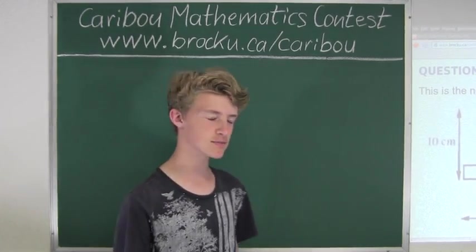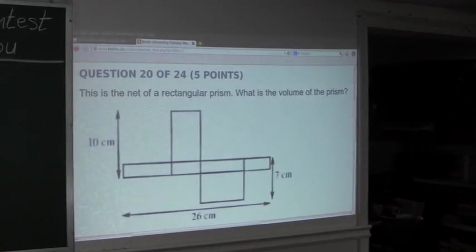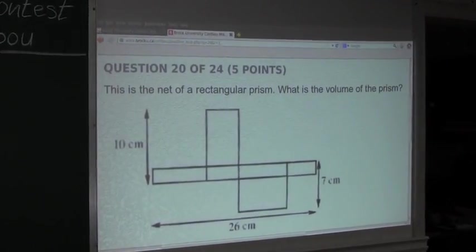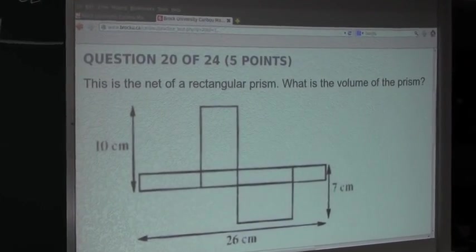So the question is: This is the net of a rectangular prism. What is the volume of the prism?